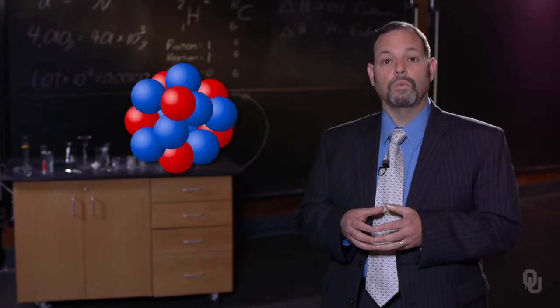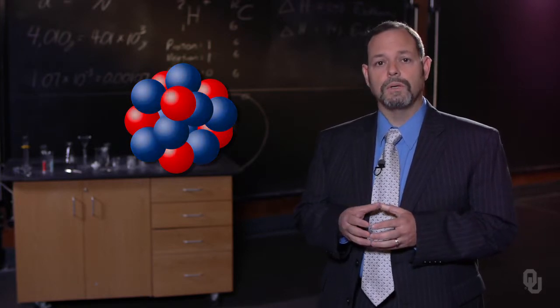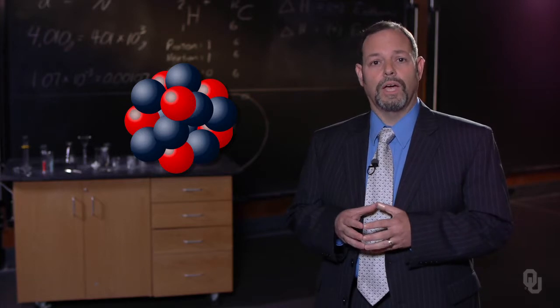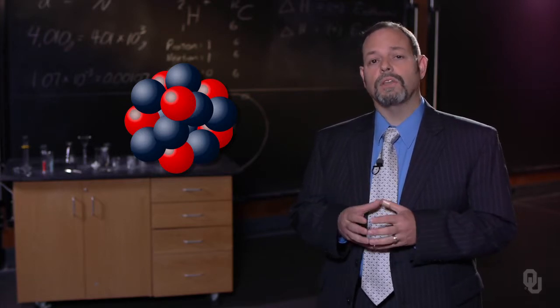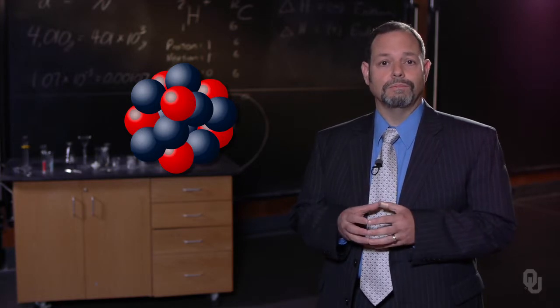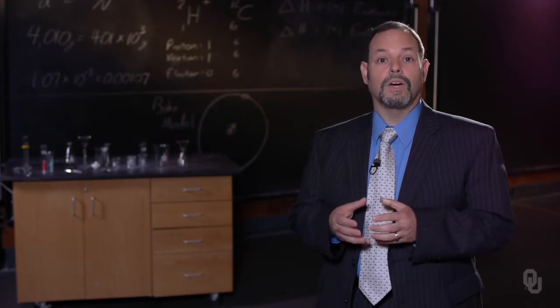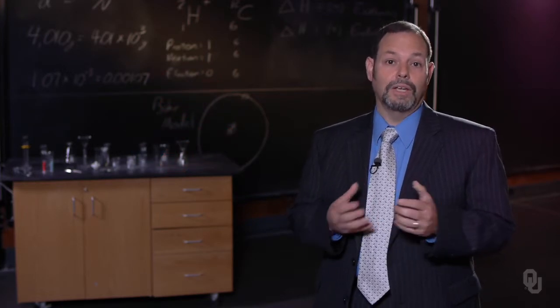In the nucleus, we have protons and neutrons. The protons are essential - they give us what element we actually have. If we have one proton, it's hydrogen. If we have six protons, it's carbon. This is the atomic number, and it gives us the element.